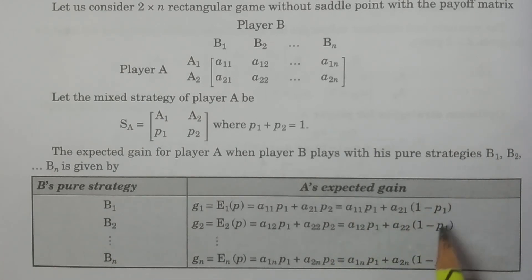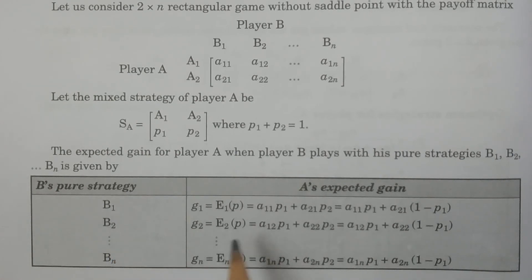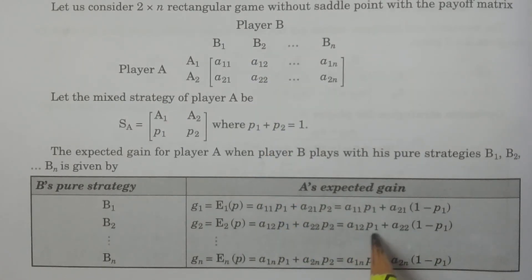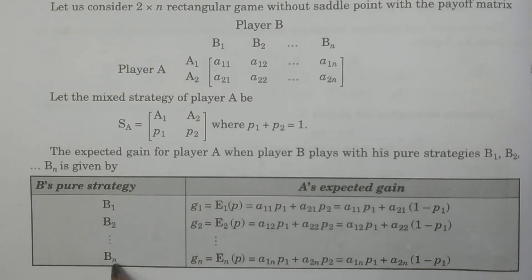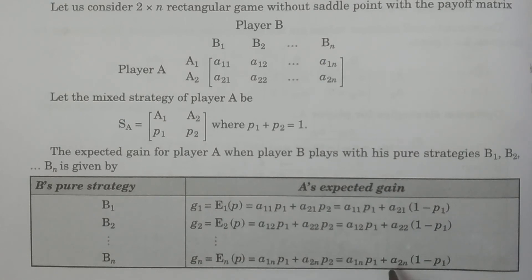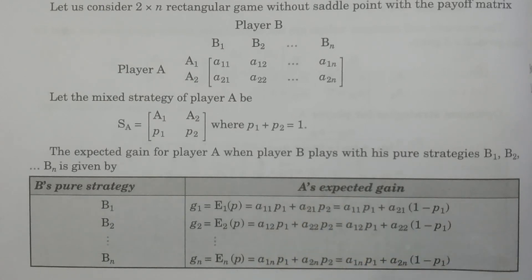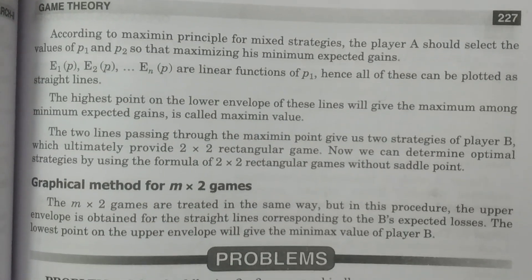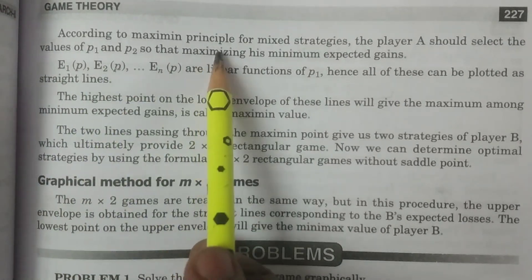Continuing, if Player B selects strategy Bn, the expected gain for Player A is En(p) = a1n·p1 + a2n·(1 − p1). So every expected gain is expressed in terms of p1. According to the maximin principle for mixed strategies, Player A selects the values of p1 and p2 that maximize his minimum expected gains.